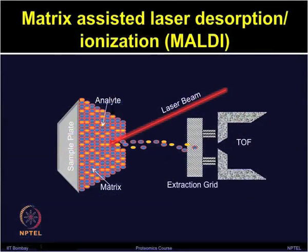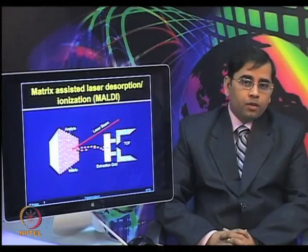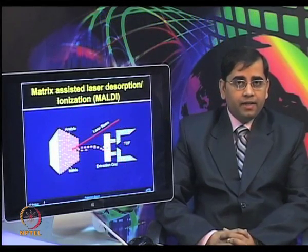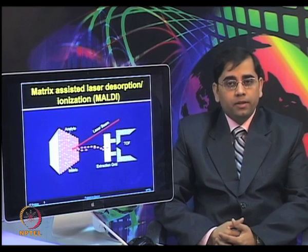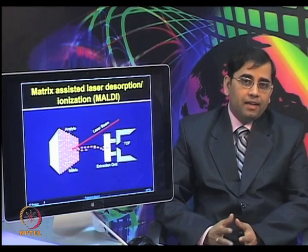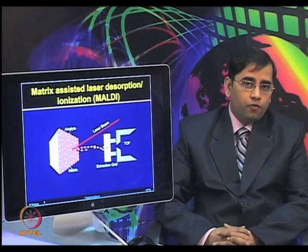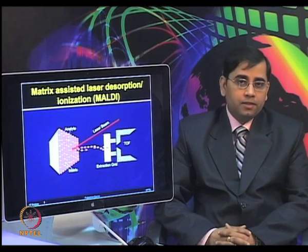Once the matrix and analyte are placed on the target plate, it is put in a vacuum chamber with high voltage applied. The crystals are targeted with short laser beams, and rapid sublimation converts the analyte into gas phase ions. These ions, once generated, accelerate away from the target plate through the mass analyzer — which is a time-of-flight (TOF) tube — and reach the detector.